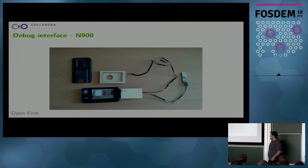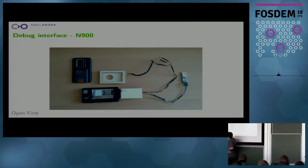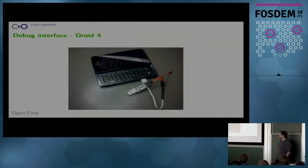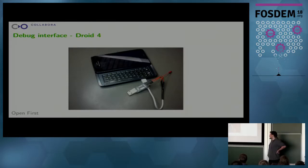For the N900, this was quite hard to do because the debug access was below the battery — there are some pads there, so I had to build some adapter to get access to it, which took quite some time. For the Droid 4, it's much simpler because it has the serial pins pin-muxed to the USB connector. So you can just use a normal USB cable, cut it, connect it to a standard USB serial adapter, and then you have serial. The only important thing is that you don't attach the 5-volt pin, because then it will mux back to USB mode.